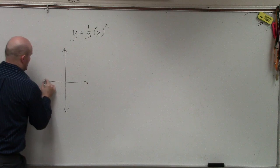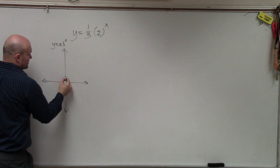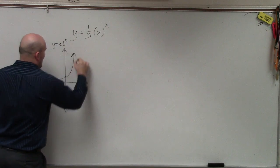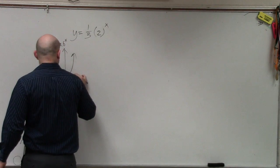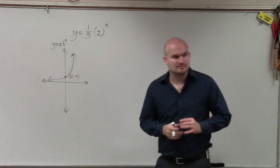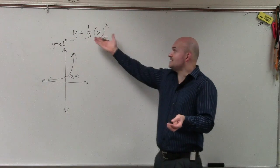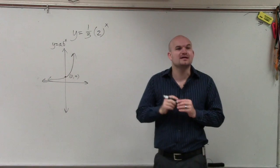when you have the equation y equals a times b to the x, the graph crossed at the coordinate point (0, a). Correct? So to graph this, the main important thing we want to do is identify what is a. So in this example, what is our a, Dong-Hil?